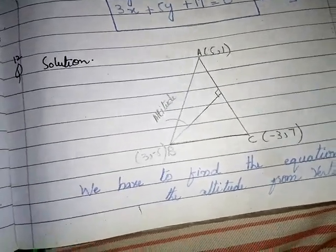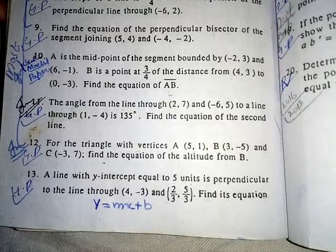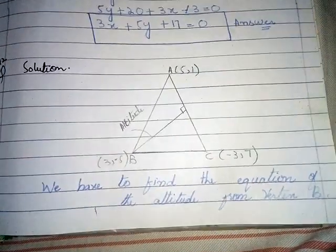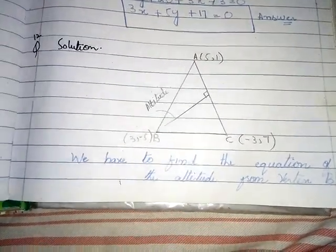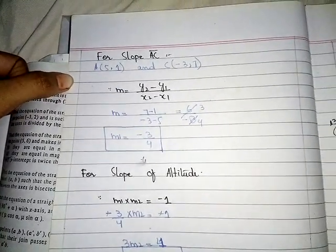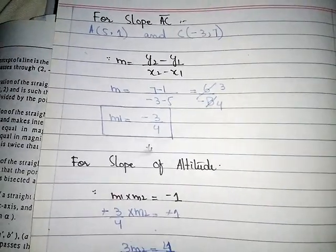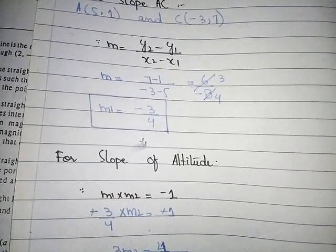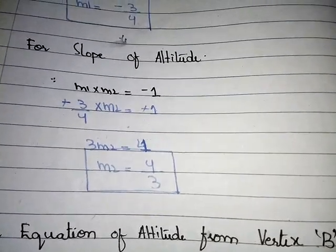Now we learn Question 12. For the triangle with vertices A, B, and C, the vertices are given. Find the equation of the altitude from B. Look at the diagram drawn according to the question. Firstly, find slope of AC: A is (5, 1) and C is (-3, 7). Using slope formula: m = (7 - 1)/(-3 - 5) = 6/(-8) = -3/4.